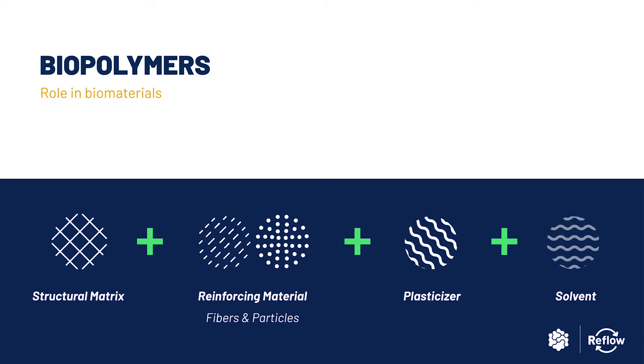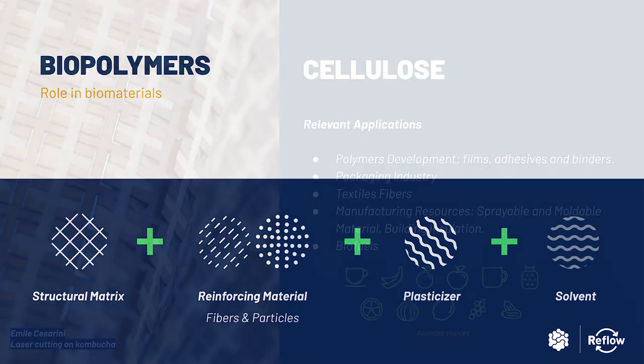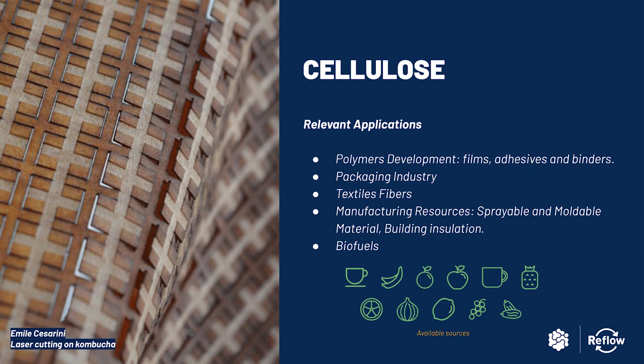As we've mentioned before, cellulose is the most abundant biopolymer in nature and can be found in plant cell walls and is produced by bacteria, just like the kombucha material you can see in this image that has been machined by a laser cutter. It consists of microfibrils with a rigid and ordered structure that is responsible for the resistance to degradation of this polymer, which is not soluble in water.